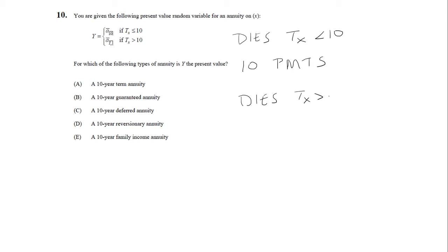Now if the person dies when the time of death is greater than 10, there's going to be 10 payments plus the number of years the person is alive. So if you look at the minimum payments, the minimum is obviously 10.